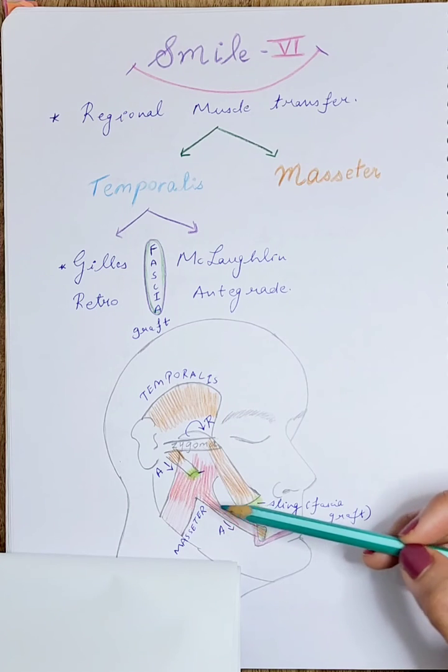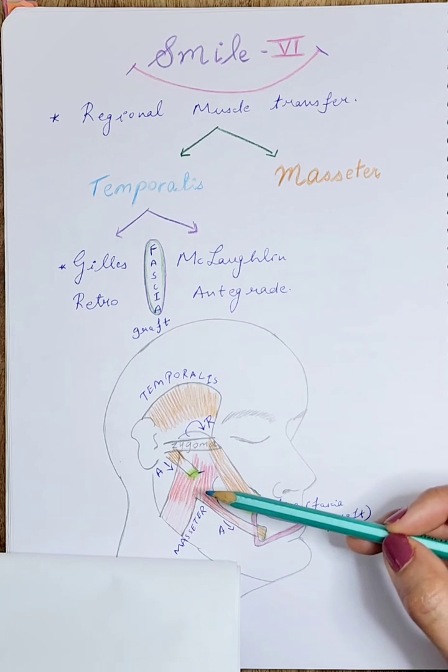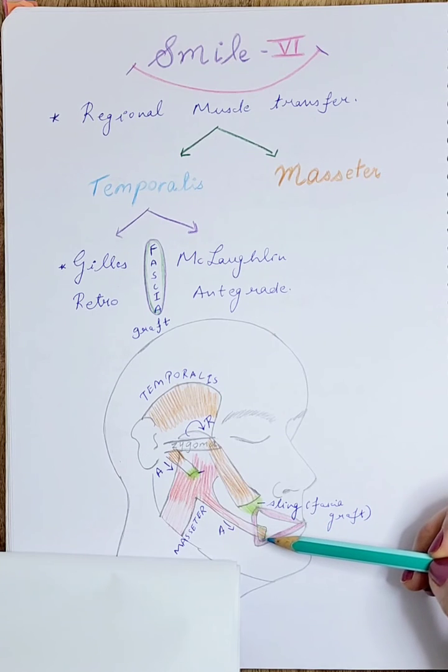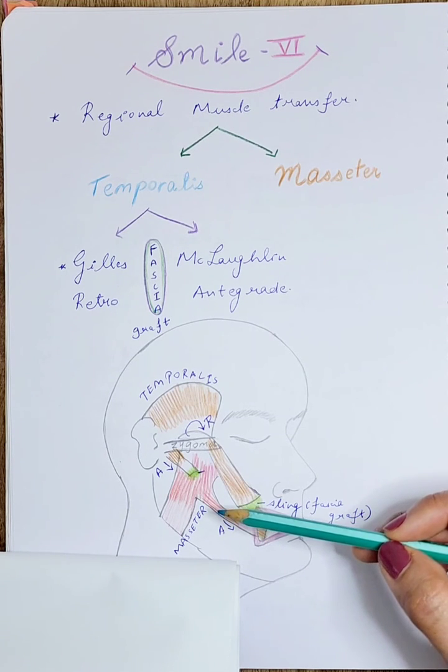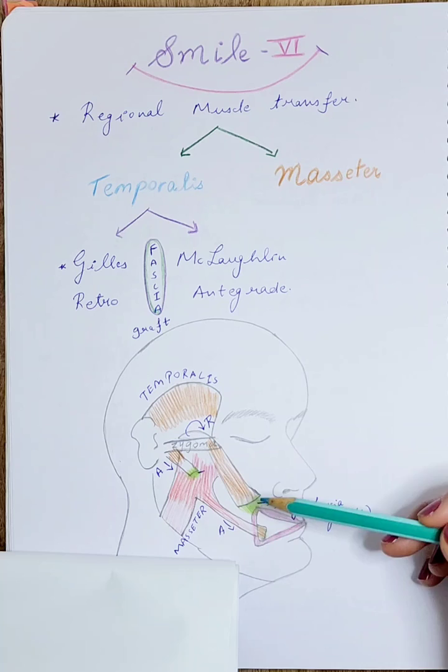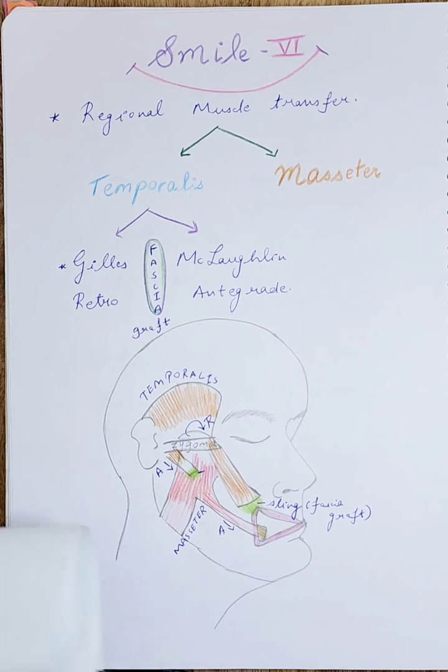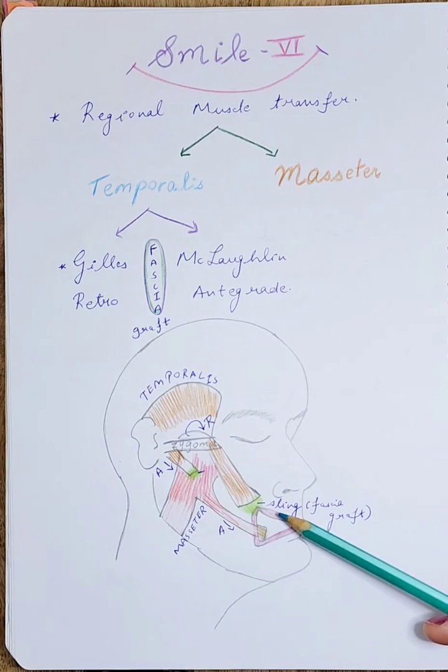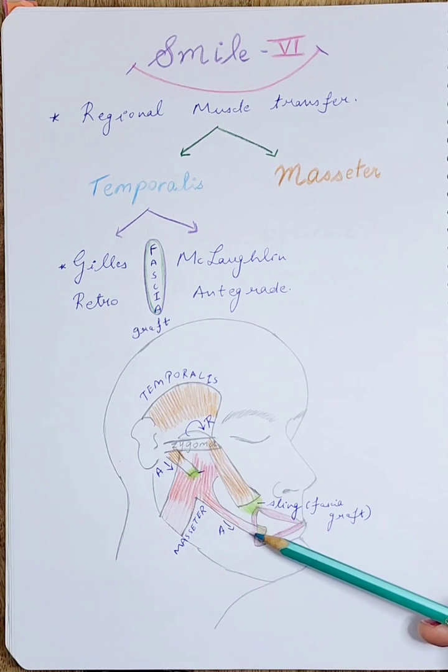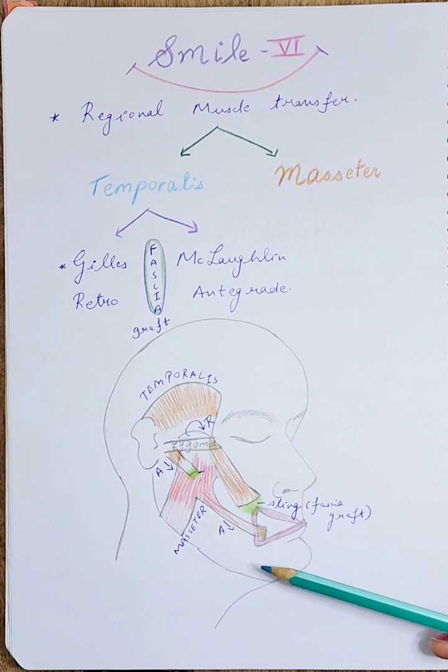The masseter, as a powerful muscle, as well as temporalis, are usually the choices taken when gracilis or free functional muscle is not available and when we don't have good facial nerve supply from the opposite side. They do create an unnatural smile, but here we're concentrating on helping provide oral competence to the patient so that dribbling of saliva and drooling does not take place, and the patient has good oral competence.